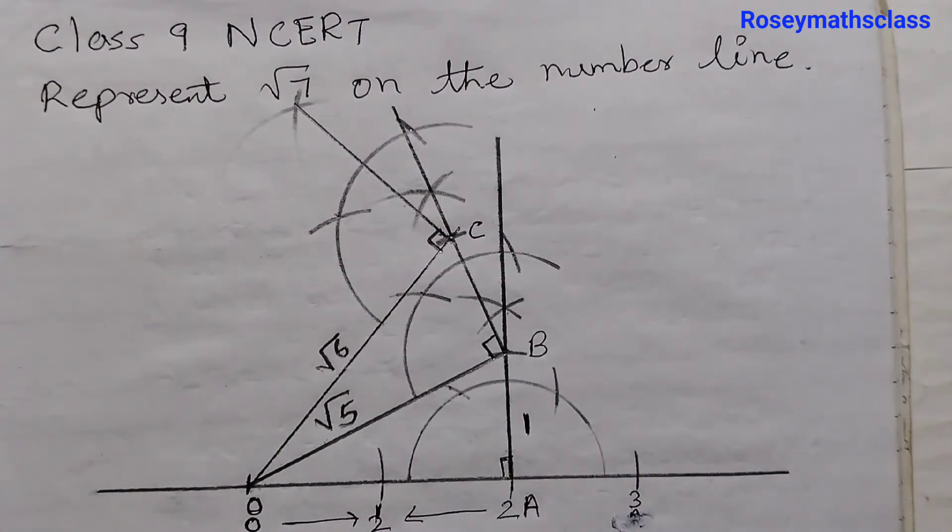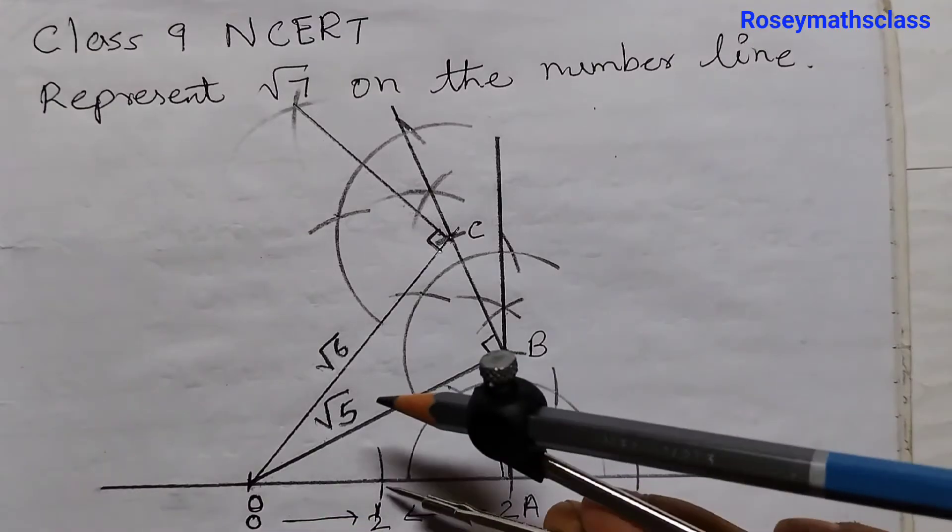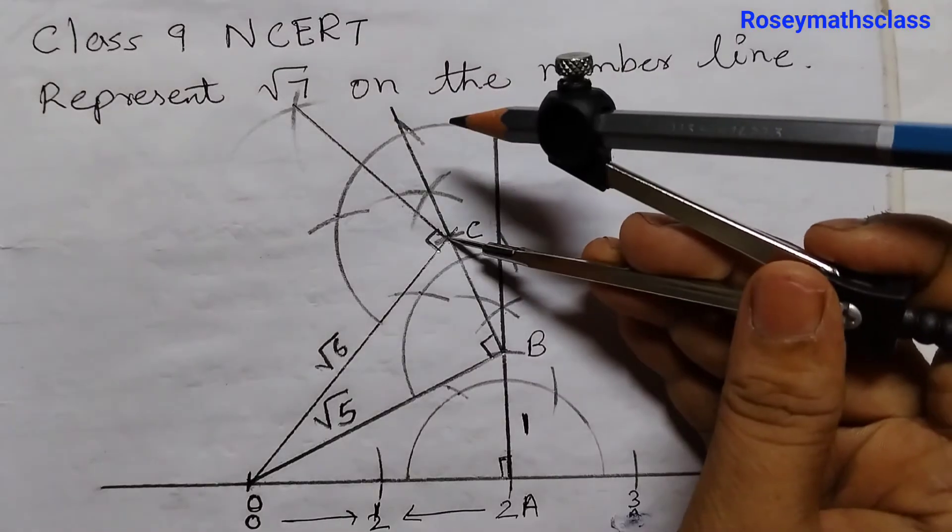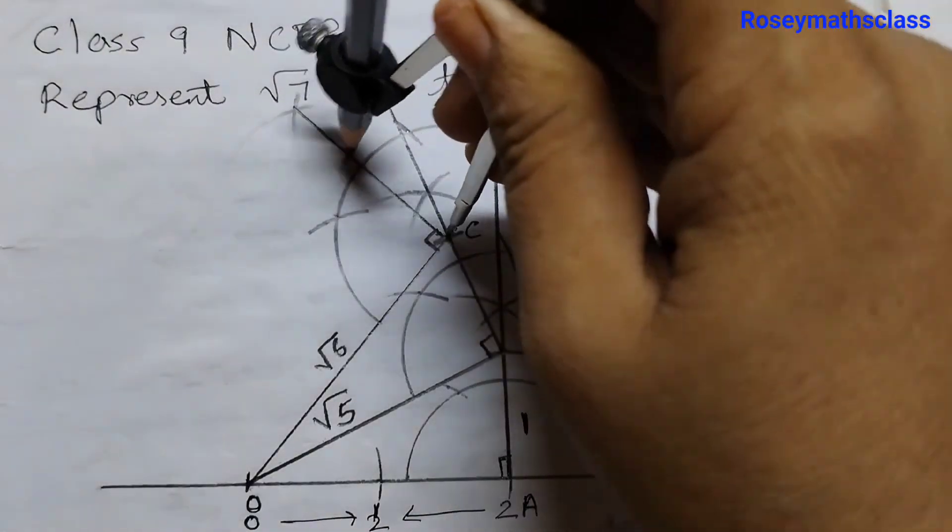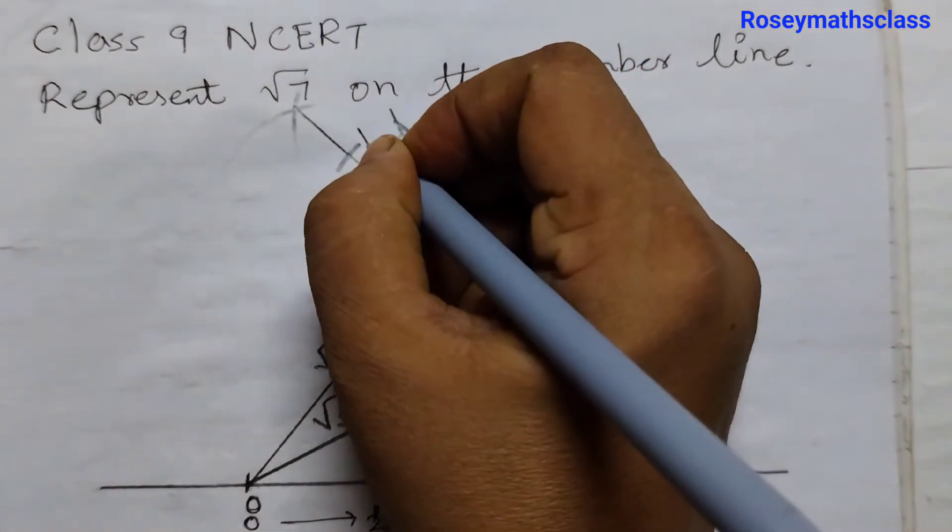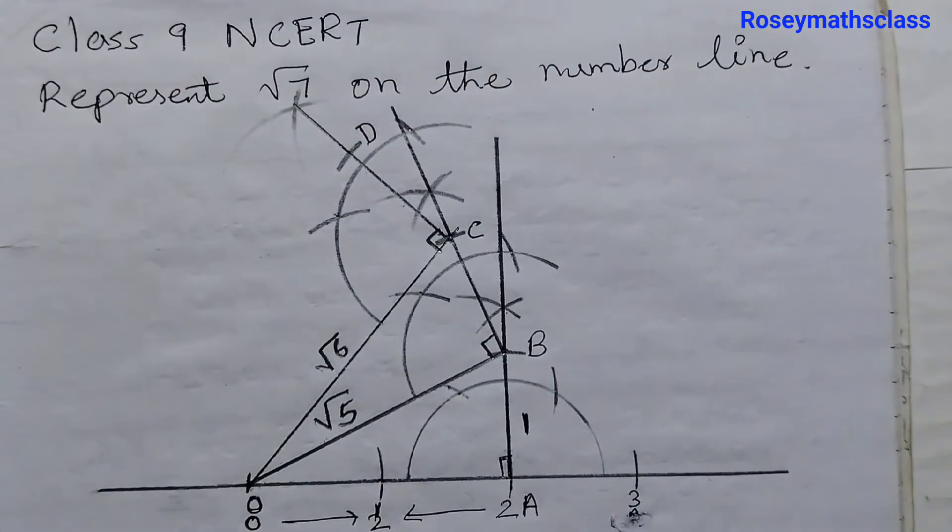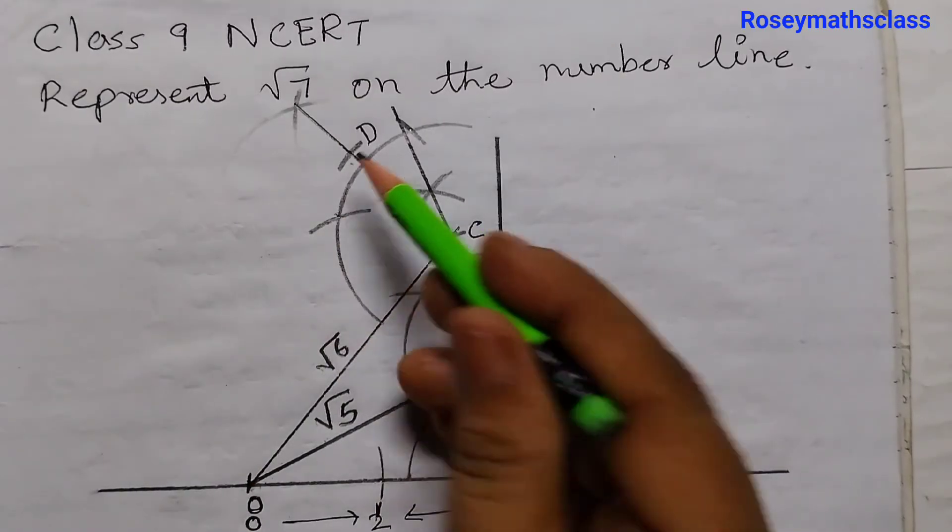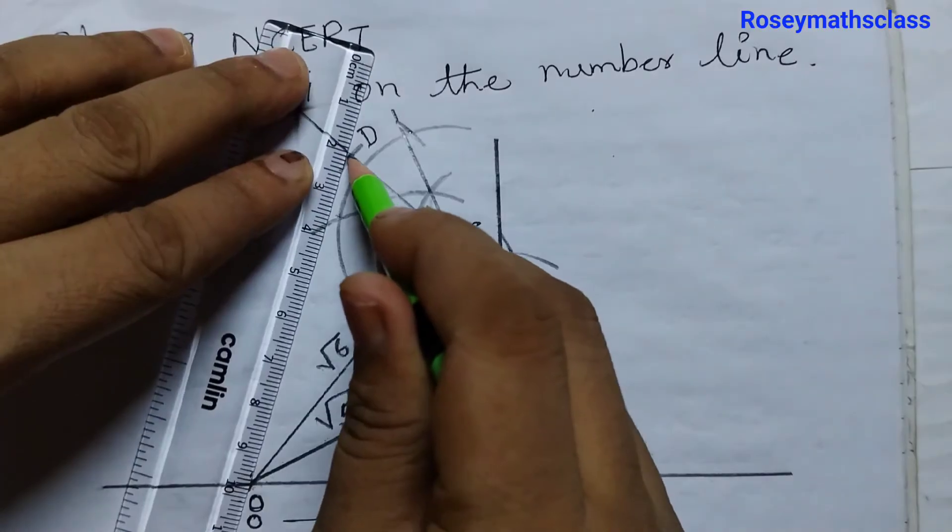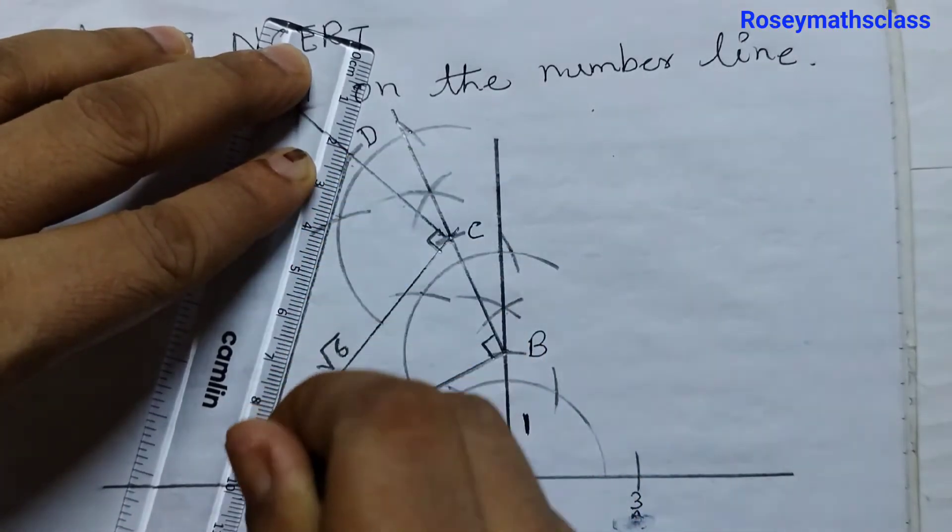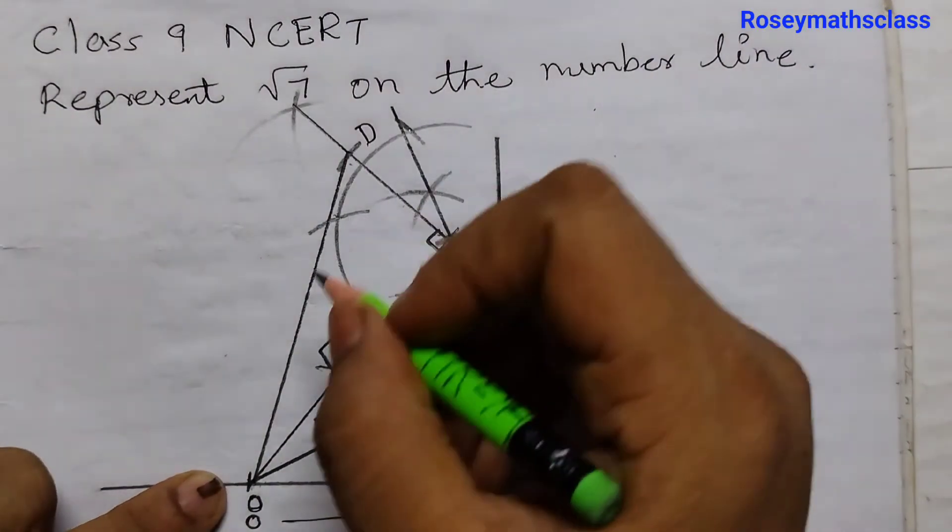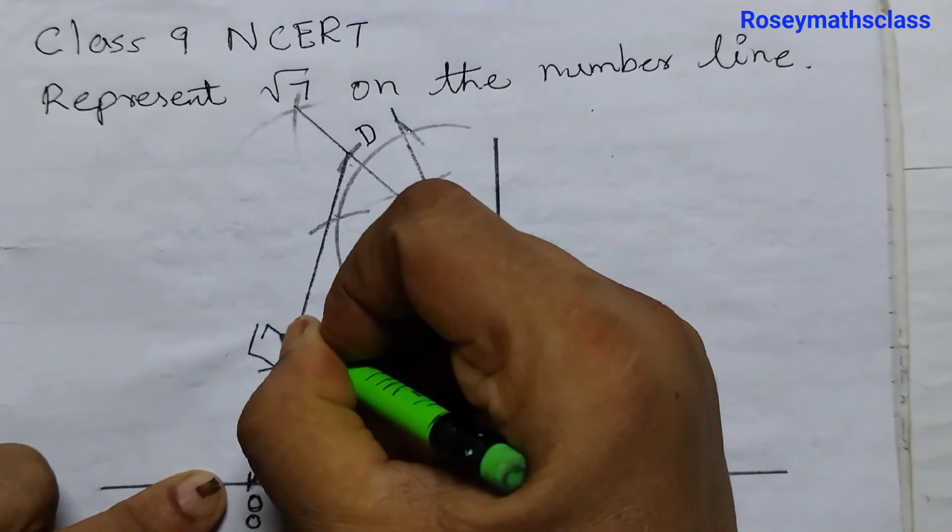Take one unit that is from 0 to 1. You can take from C, cut an arc. Label this as D. Join O, D. O, D represents square root of 7.